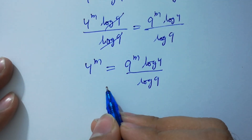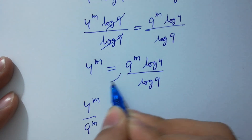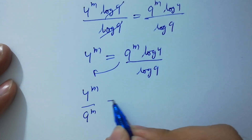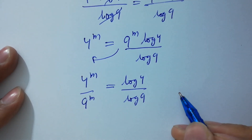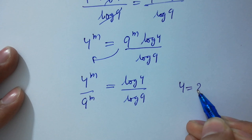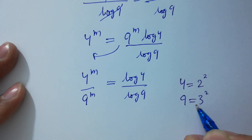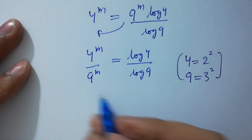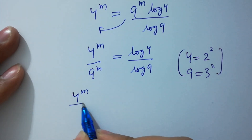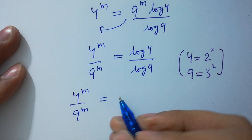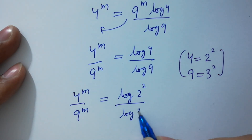This is the same as 4 to the power m over 9 to the power m equal to log 4 over log 9. Since 4 equals 2 squared and 9 equals 3 squared, we have 4 to the power m over 9 to the power m equal to log 2 squared over log 3 squared.